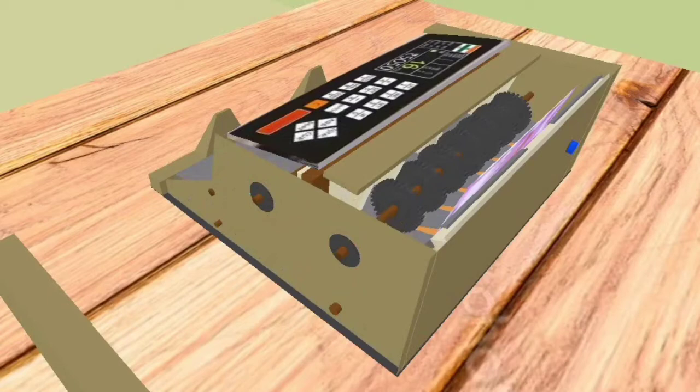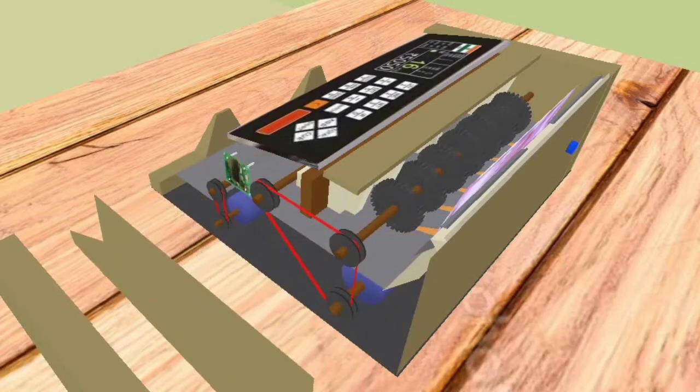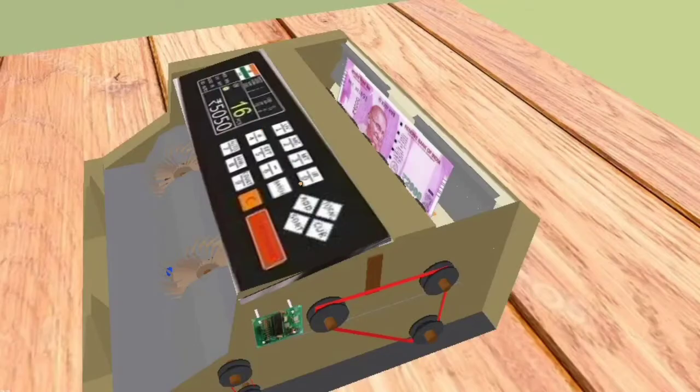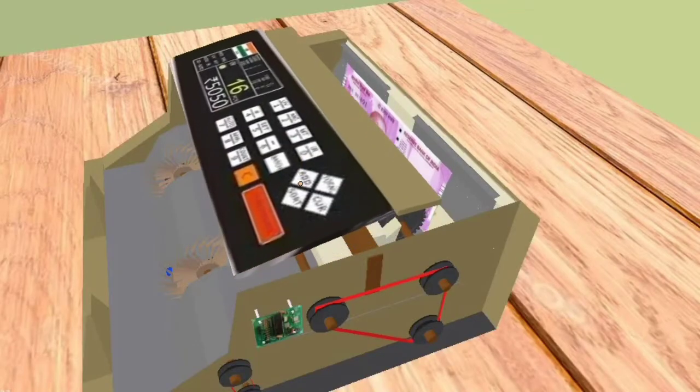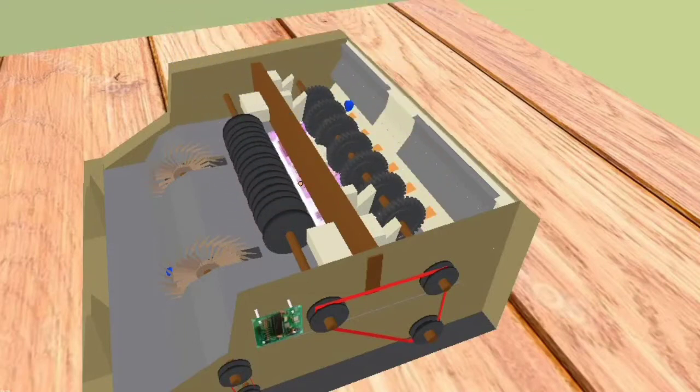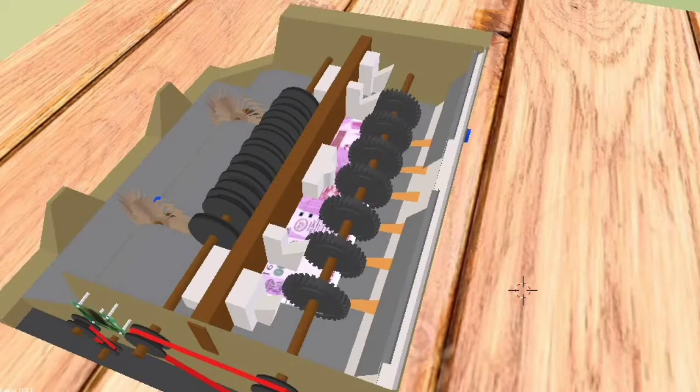Motors are connected with the rollers through belt drive. Then roller starts rotating. Roller pulls a single piece of paper every time and passes the paper forward. As the thickness is maintained between the rollers and the hopper, every time single piece of paper is accepted.